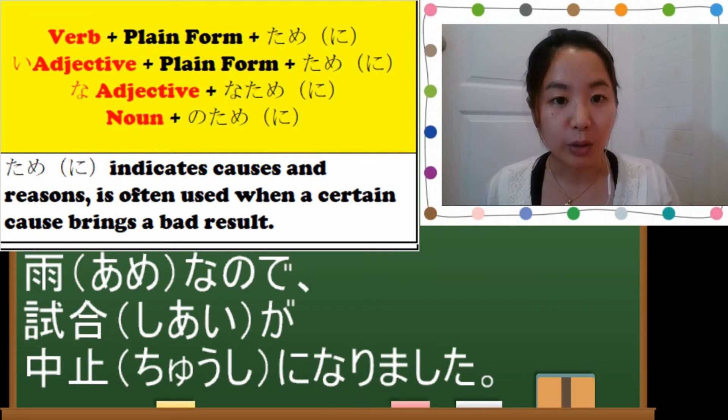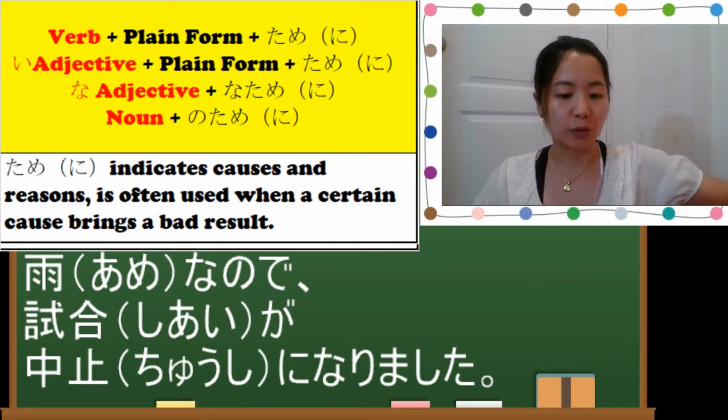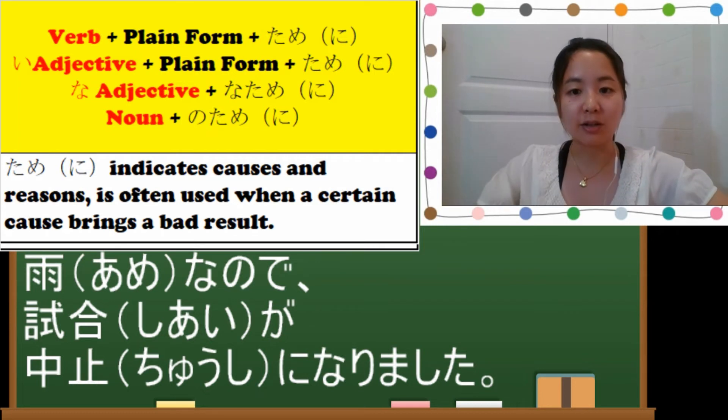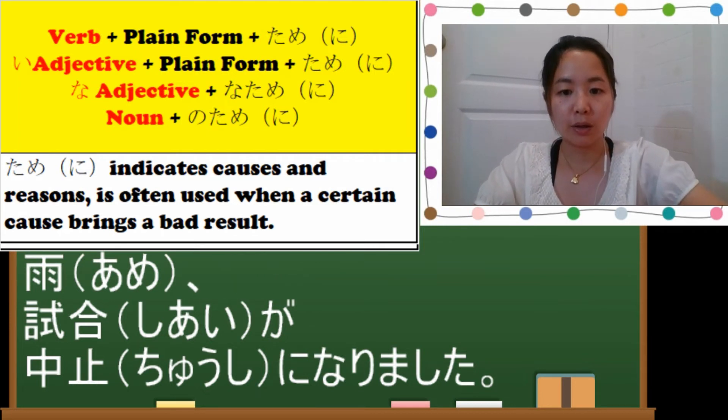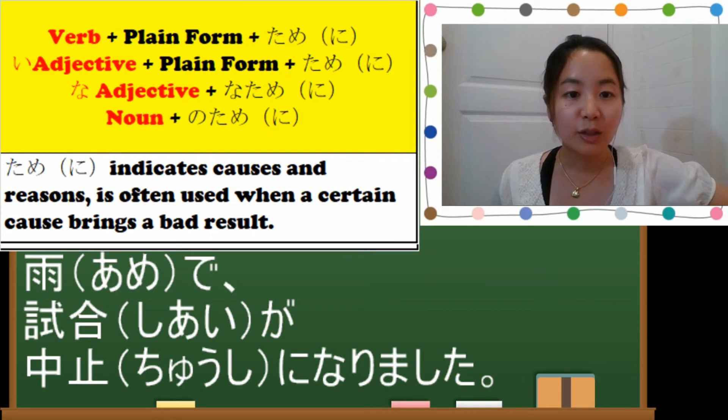And we have also learned de. Noun plus de. So de is used for after natural phenomenon or disaster. Ame de shiai ga chuushi ni narimashita. So these are all same meaning. It means because something something or since something something.